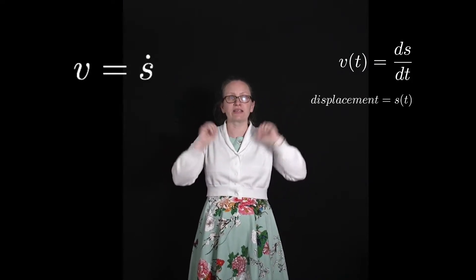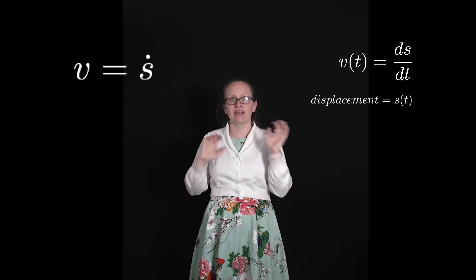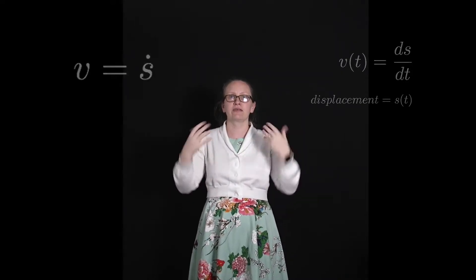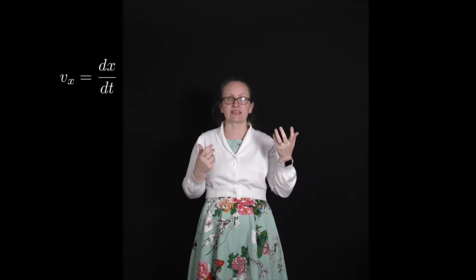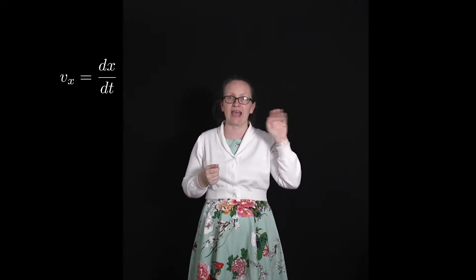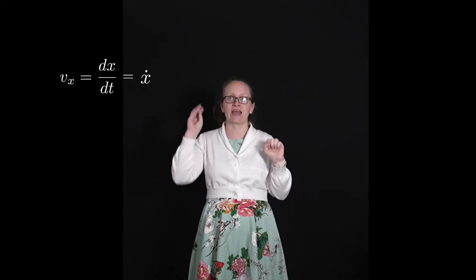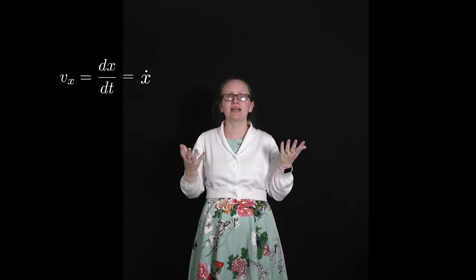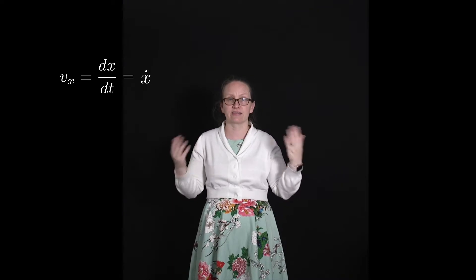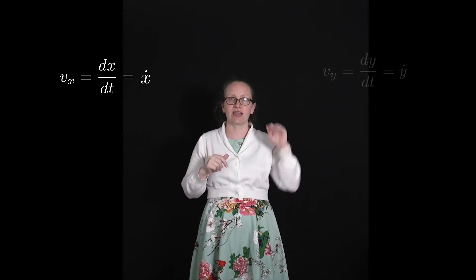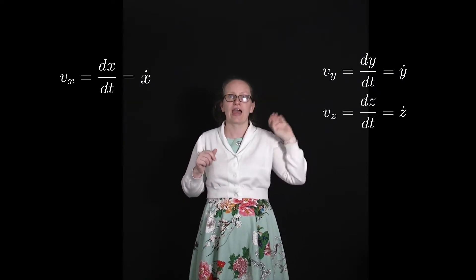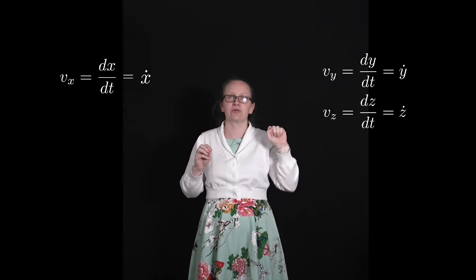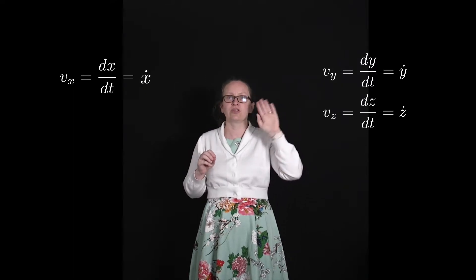With this equation we can consider it separately in each of the three dimensions. So we can write that the velocity in the x direction is equal to dx/dt. To show that the velocity is in the x direction, we give it a subscript x, or we can write this as x-dot. We can write similar equations for y and z: v_y = dy/dt = y-dot, and v_z = dz/dt = z-dot.